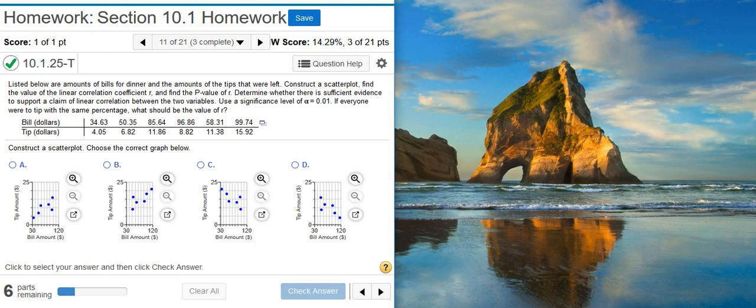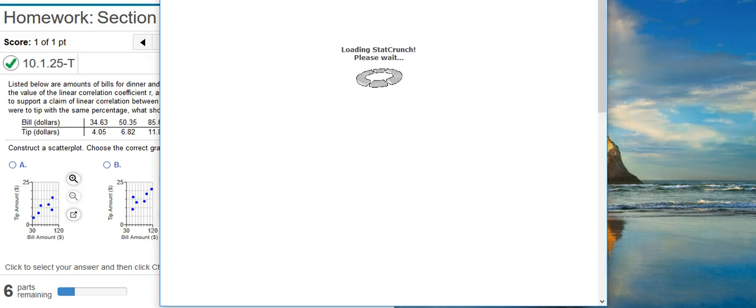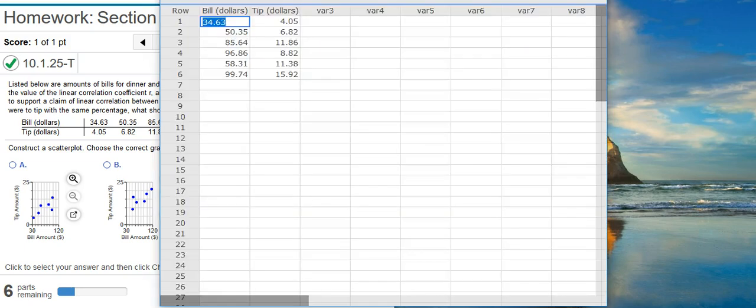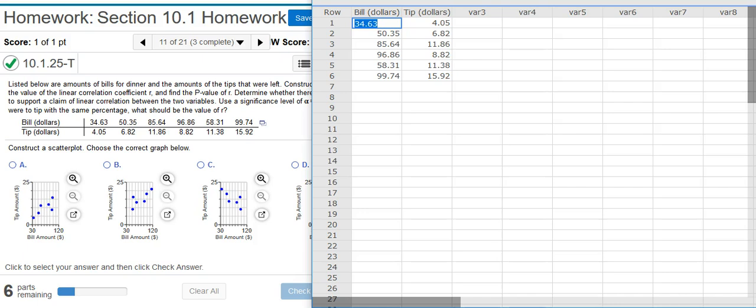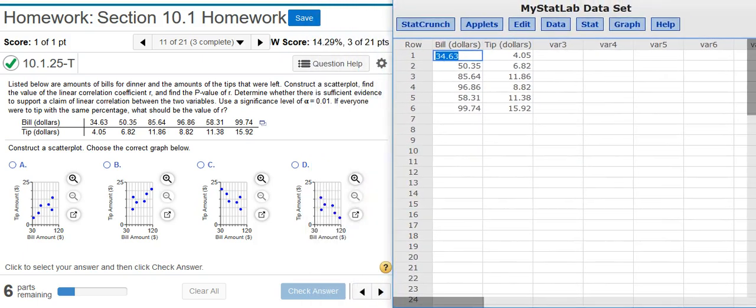Okay, the first part asks me to construct a scatter plot. To do that, I'm going to take my data that we see right here and I'm going to dump it into StatCrunch. Now, my data is here in StatCrunch. I'm going to resize this window so we can see a little bit better everything that's going to go on.